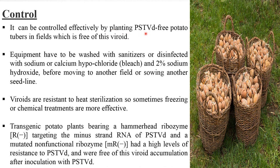To control this viroid, it can be effectively managed by planting PSTVd-free potato tubers in a field which is free from this viroid. Equipment must be washed with sanitizer and disinfected with sodium or calcium hypochlorite and two percent sodium hydroxide before moving to another field or sowing another seed line. Viroids are resistant to heat sterilization, so freezing or chemical treatment are more effective. Transgenic potato plants bearing a hammerhead ribozyme targeting the minus strand RNA of PSTVd, and a mutated non-functional ribozyme, showed a high level of resistance and were free of viroid accumulation after inoculation.